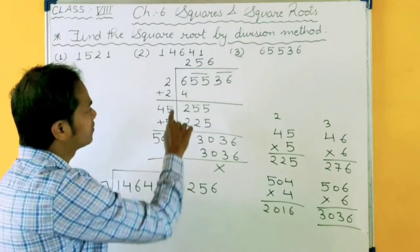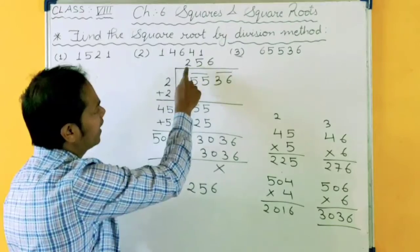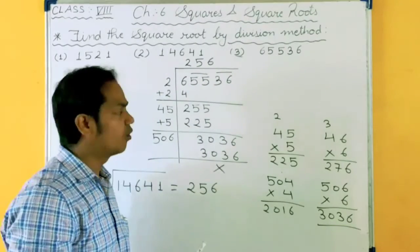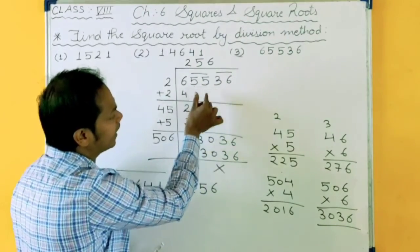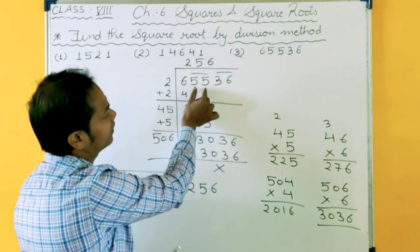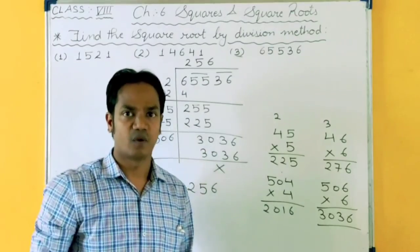Only you have to learn this method. But the same number you will take here and you will add here. And rest process is of division only. And you take pair. In division you take single number, but in square root by division method you take one single pair.